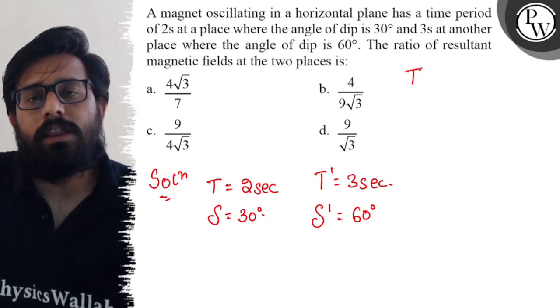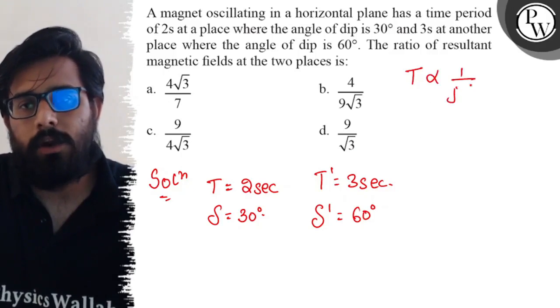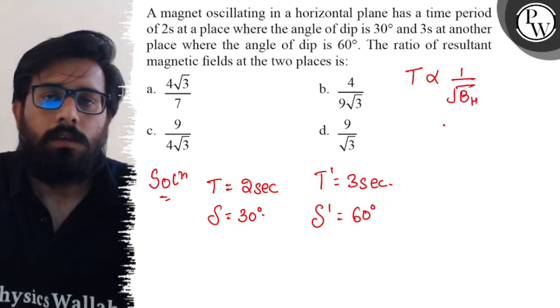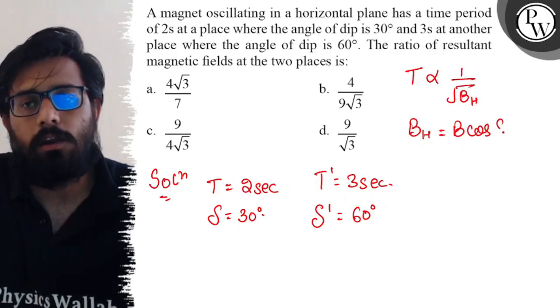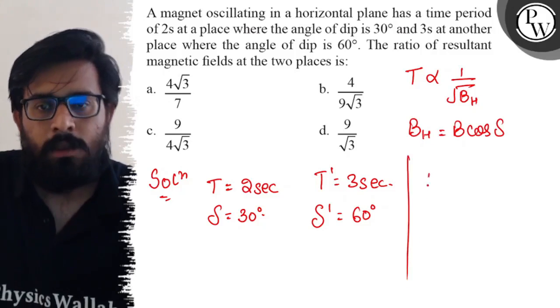We know the relation that T is inversely proportional to √(Bh). This can also be written as Bh = B cos(δ), so T can be written as √(B cos δ).